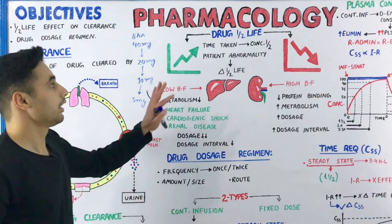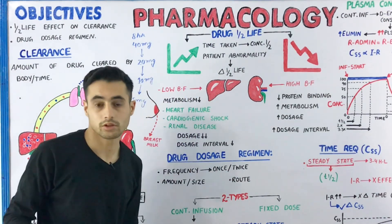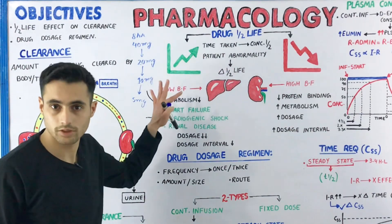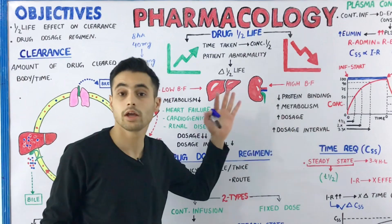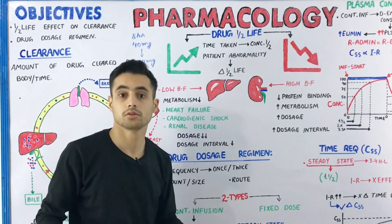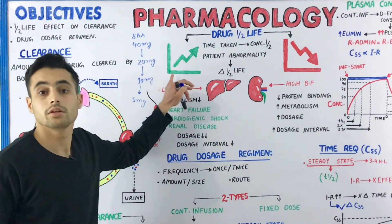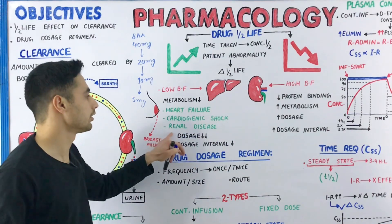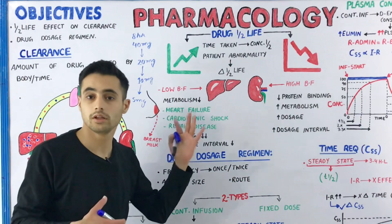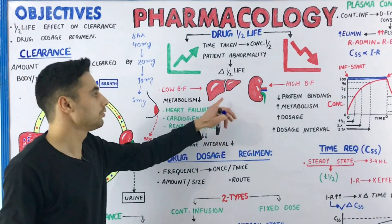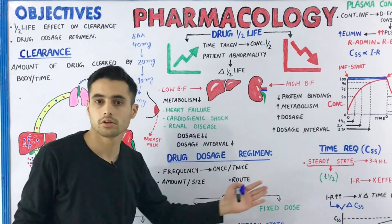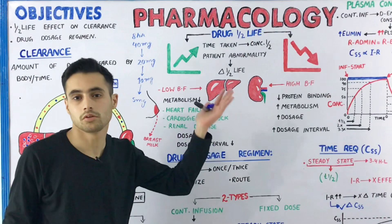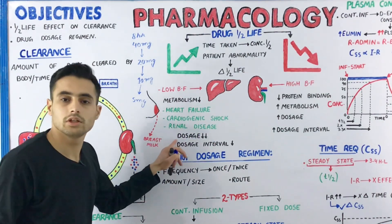In certain situations, a patient may have an abnormality that changes the half-life of the drug. This happens in two situations: the patient can have an increased half-life or a decreased half-life. Where the half-life is increased, the blood flow to the organs is reduced — as in renal disease, cardiogenic shock, or heart failure. Since the liver and kidney are involved in clearance, their reduced blood flow increases drug half-life, so we must compensate by reducing the dosage and the dosage interval.